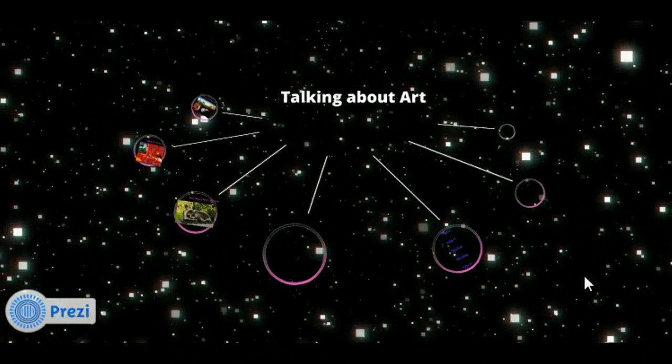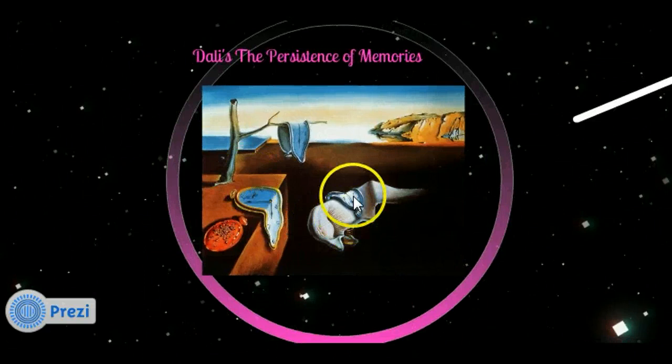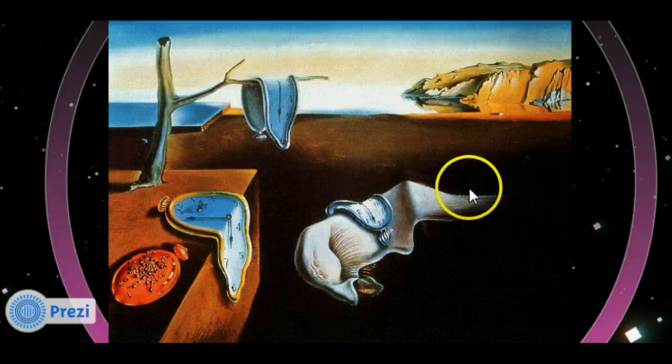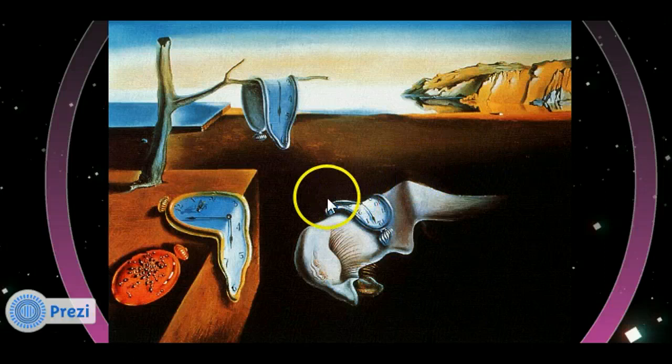Let's get started with Salvador Dali's The Persistence of Memory. The subject in this painting is a dreamlike landscape, watches, clocks — that would be the subject. The theme of this would be time. Everything here is pointing to the passing of time as the theme.